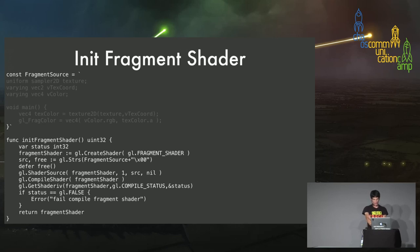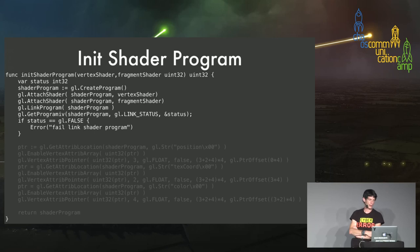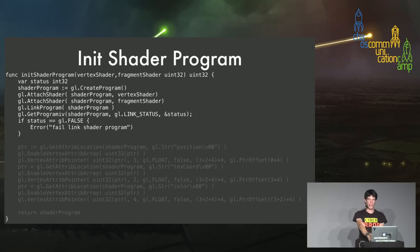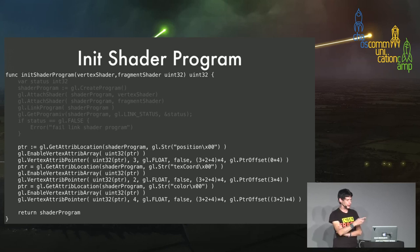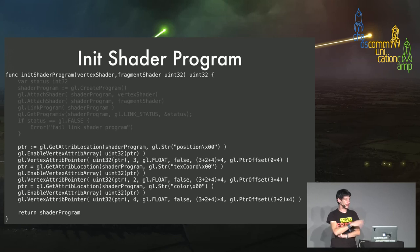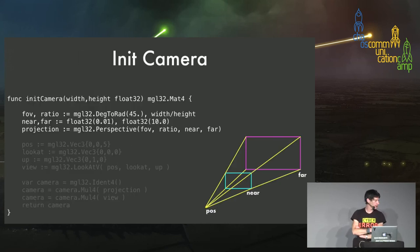The fragment shader is also very simple: it takes a texture uniform variable, plus the two varyings from the vertex shader (texture coordinate and color). Inside, it looks up the texture color at the specific texture coordinates using the sampler2D, then sets gl_FragColor using the red, green, blue from the vertex attributes but taking the alpha value from the loaded texture. It's compiled the same way: GL_CreateShader, GL_ShaderSource, GL_CompileShader. Then both shaders are linked into a shader program using GL_CreateProgram, attaching both shaders, GL_LinkProgram, and checking for errors. Finally, GL_VertexAttribPointer calls specify where in memory to find position, texture coordinate, and color vertex attributes.